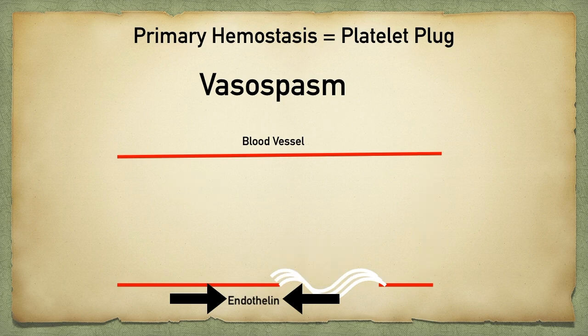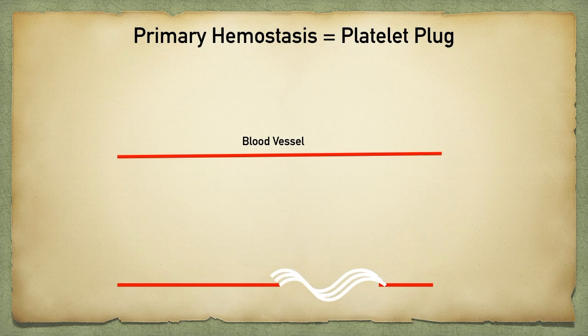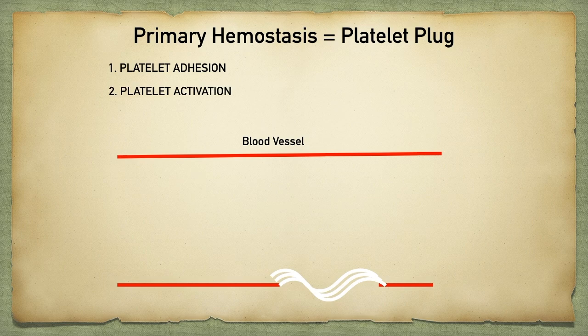So this was called vasospasm. The next thing that occurs is the formation of a platelet plug, and this occurs in three steps: platelet adhesion, activation, and aggregation.